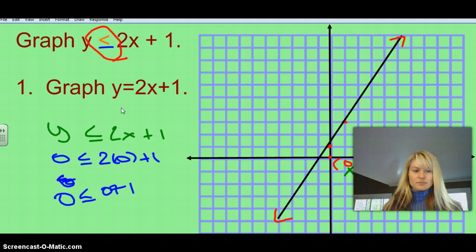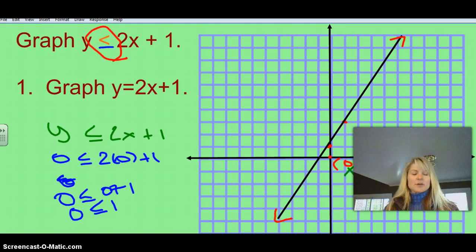So now we know, if we look down here, we have 0 is less than or equal to 1. So we have to ask ourselves, is that true? Is 0 smaller than 1? And the answer is true. It is smaller than 1. So what that means is, because this is on this side of the line, it means every point on this side of the line works.